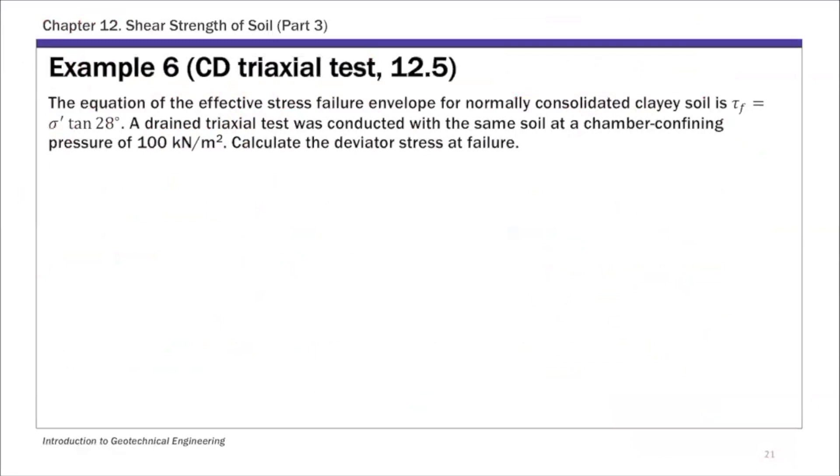In this example, again, CD triaxial test, so this time we are given τf = σ' tan 28°. So we're given this Mohr-Coulomb failure criterion, which means this friction angle is given. So remember that tan 28, so that 28 is basically your friction angle.